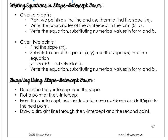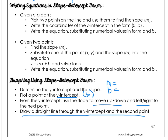When graphing using slope-intercept form, first determine the Y-intercept and the slope — you can write M equals and B equals next to the equation. Plot a point at the Y-intercept, remembering that the Y-intercept is B. Then, from the Y-intercept, use the slope to move up or down (rise) and left or right (run) to find the next point. Draw a straight line through the Y-intercept and additional points — try to plot as many as you can to confirm they're all on a straight line.